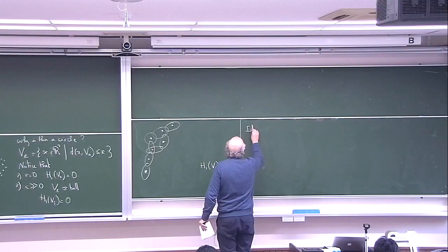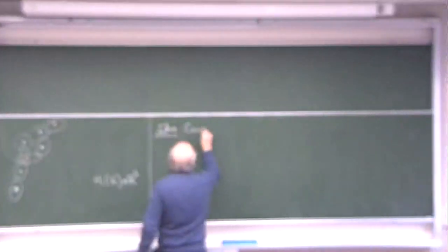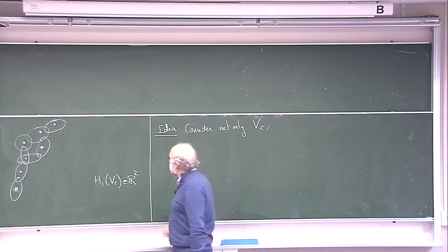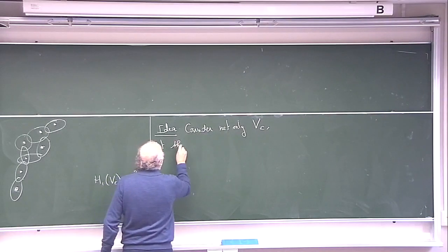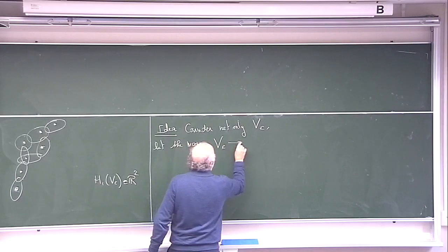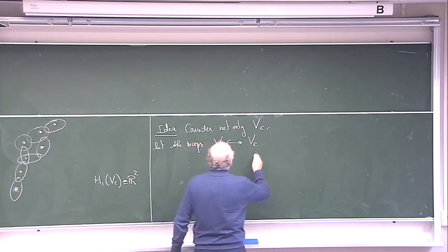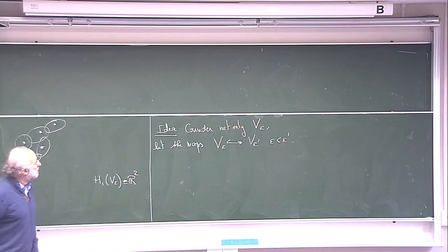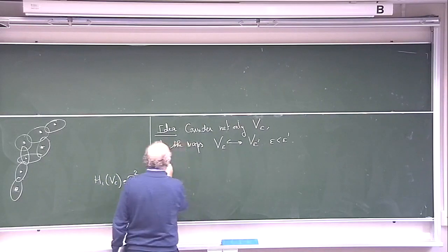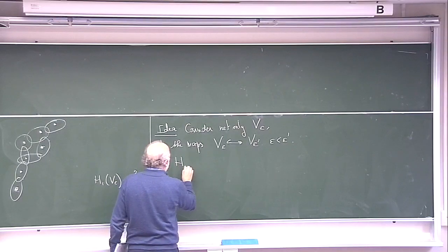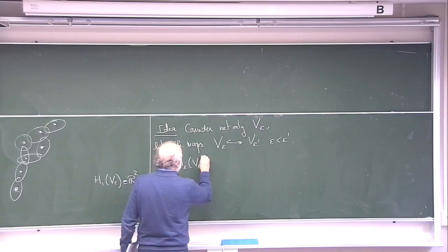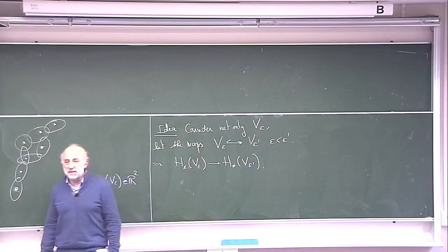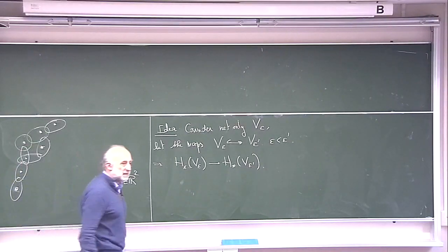So the idea is to consider not only the V_epsilon but also the maps induced by inclusion from V_epsilon to V_{epsilon'} for epsilon less than epsilon prime. Because you have this inclusion, it gives you a map from the homology of V_epsilon to the homology of V_{epsilon prime}, for any epsilon less than epsilon prime.